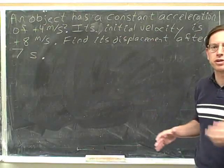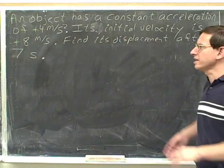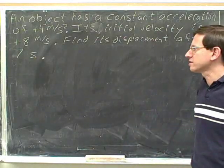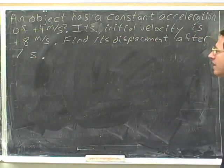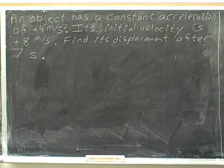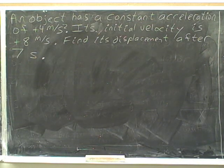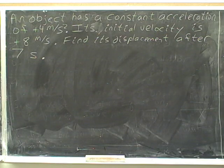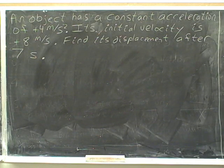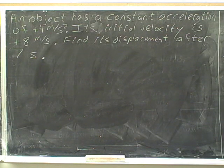Here's a problem I'm going to work through. Let's start by copying this into your notes. An object has a constant acceleration of positive 4 meters per second squared. Its initial velocity is positive 8 meters per second. Find its displacement after 7 seconds.